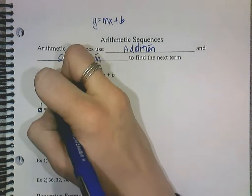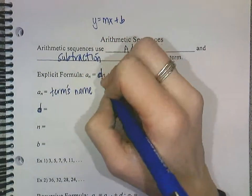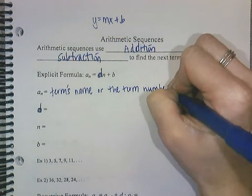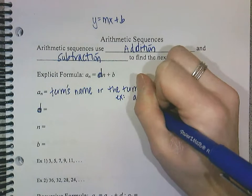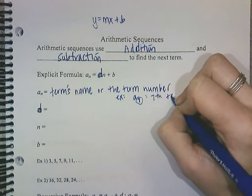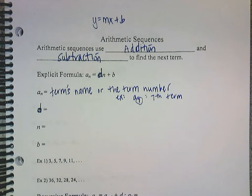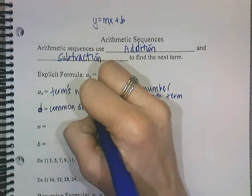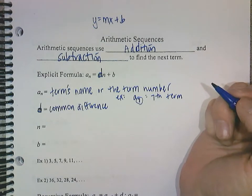Okay, a sub n is the term's name or the term number. Okay, for example, if I had a sub 7, this little 7 there at the bottom, that means that it's the 7th term that we're talking about. Okay, the d is the common, it's called the common difference. This is what you're adding or subtracting by each time.